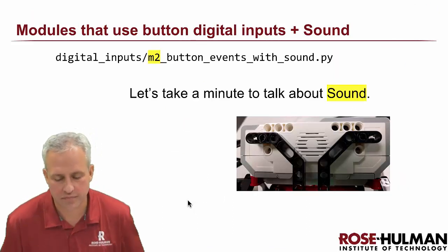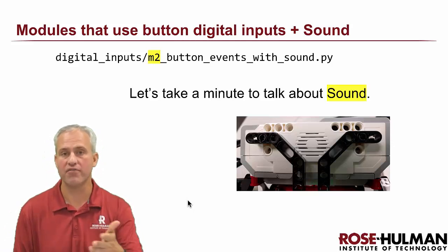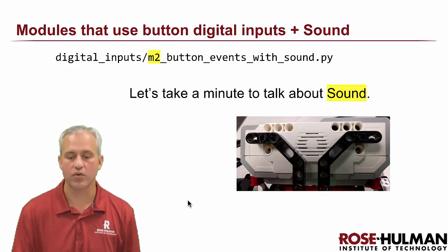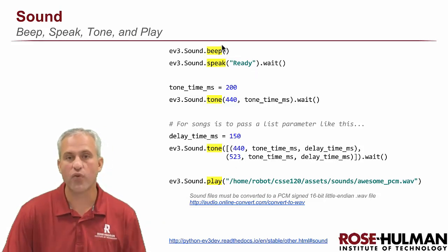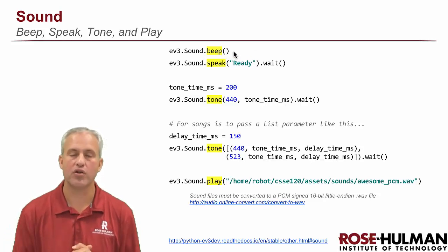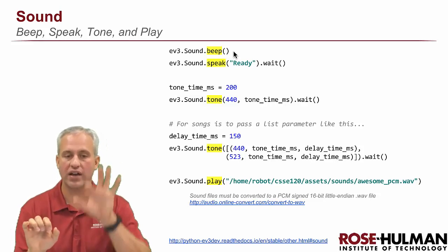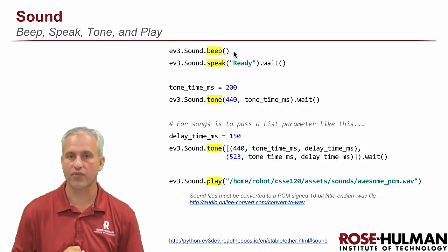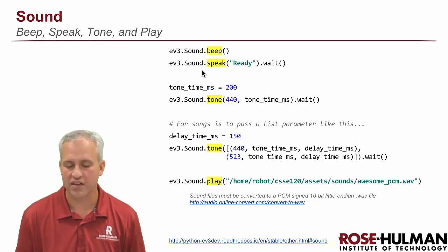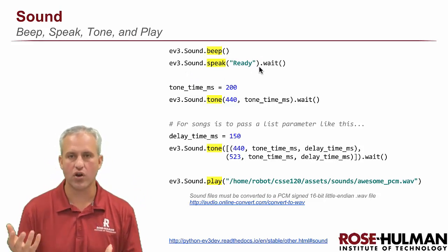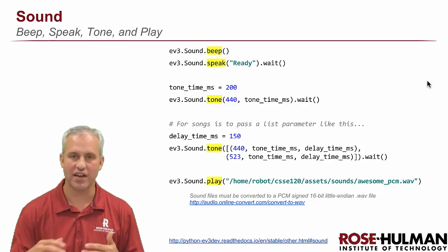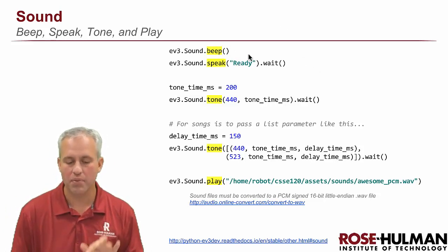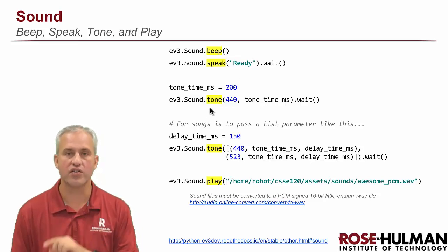In M1 we use button states and learn about LEDs — you'll be a master by the end. In M2 we move to button events and work with sound. There are four functions in the sound package. dot_beep you already know. You can add dot_wait to wait for it to finish before code keeps going, or without it the code just flows through. dot_speak makes the robot say something, and you typically want to add dot_wait when speaking.